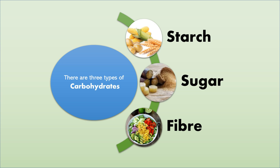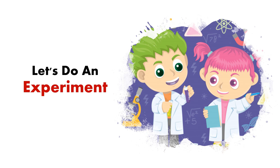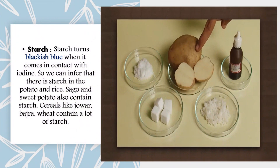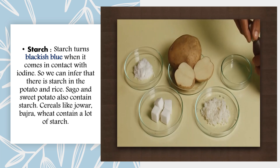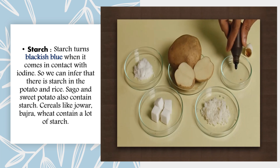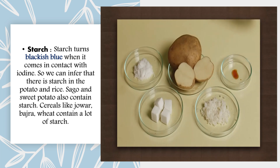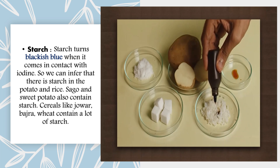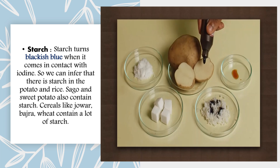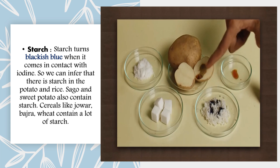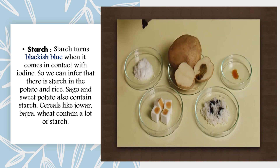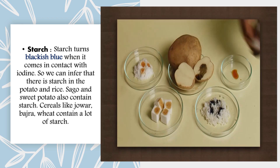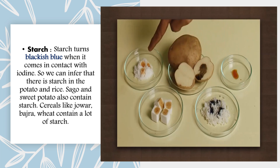Let's do a little experiment. We will see if there is starch in potatoes, rice, sugar and salt with the help of iodine, which is yellow-brown in colour. Note the change in colour of iodine as it is put on rice and potatoes — both turn the iodine blue-black. Put some iodine on a sugar cube — the colour does not change. Salt too does not change its colour. Starch turns blackish blue when it comes in contact with iodine, so we can infer that there is starch in potato and rice.